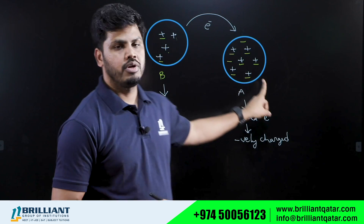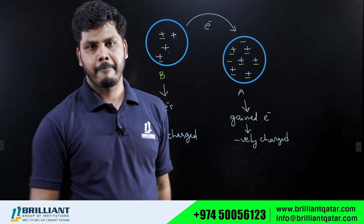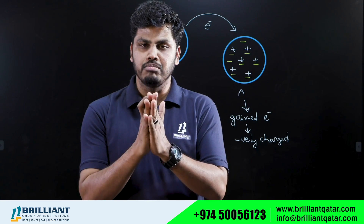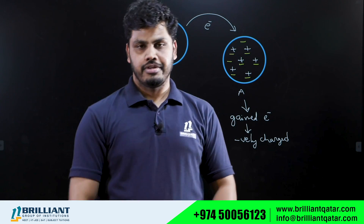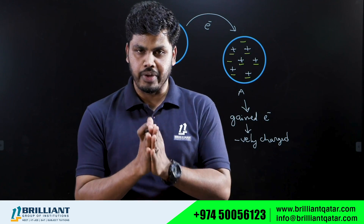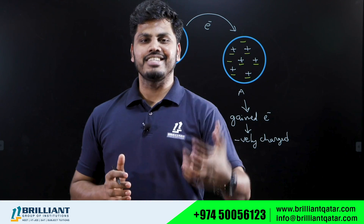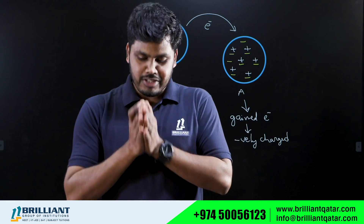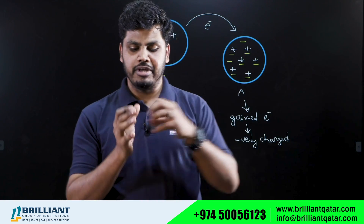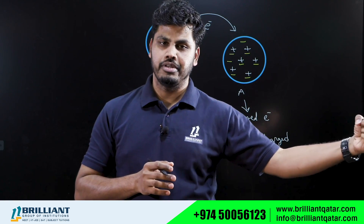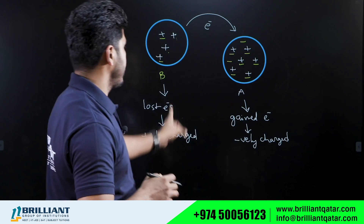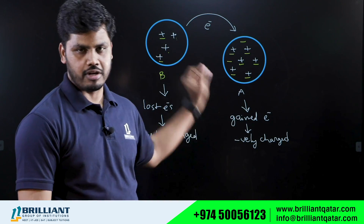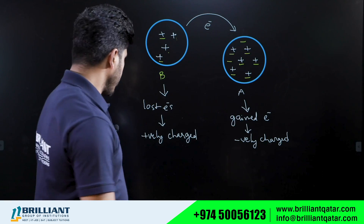The body that lost electrons will have a positive charge, and the body that gained electrons will have a negative charge. This is how we charge a body — we rub one body against the other, heat energy is generated, electrons absorb that energy and transfer from one body to the other. Now both bodies A and B can be said to be electrically charged.